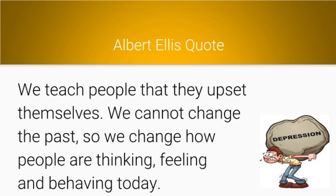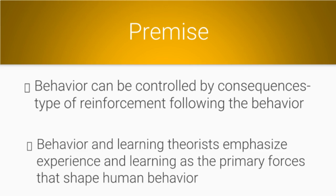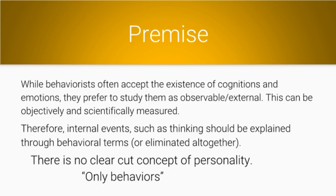Albert Ellis: 'We teach people that they upset themselves. We cannot change the past, so we change how people are thinking, feeling and behaving today.' The premise: behavior can be controlled by consequences, a type of reinforcement following the behavior. Behavior and learning theorists emphasize experience and learning as the primary forces that shape human behavior. While behaviorists often accept the existence of cognitions and emotions, they prefer to study them as observable and external — that which can be objectively and scientifically measured. Therefore, internal events such as thinking should be explained through behavioral terms, or eliminated altogether. There is no clear-cut concept of personality, only behaviors.